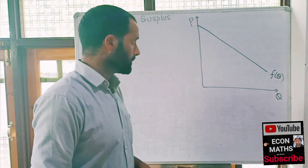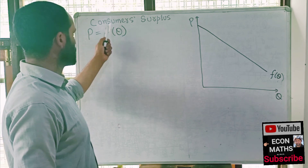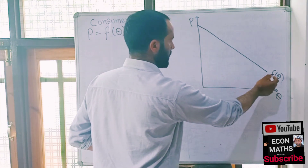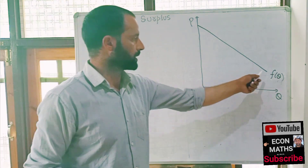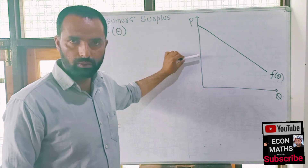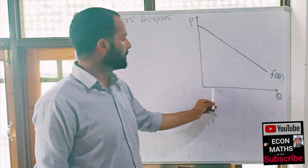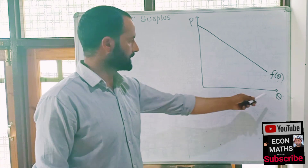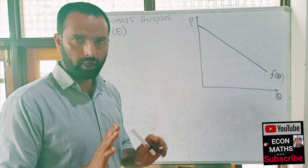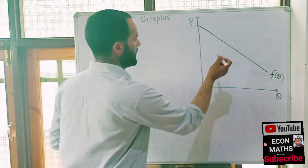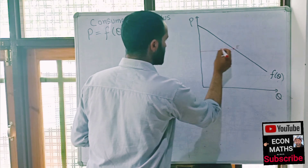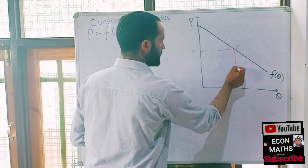Now if I have a demand function P = F(Q), this is a demand function which I have depicted here. This straight line represents the demand function. This demand function represents the different prices that consumers are willing to pay for different quantities of a good. Here, this is the quantity axis and this is the price axis. If equilibrium occurs at a point, let us say this is the equilibrium point.